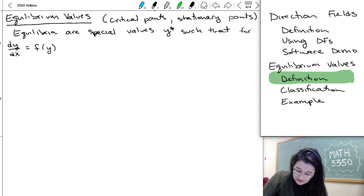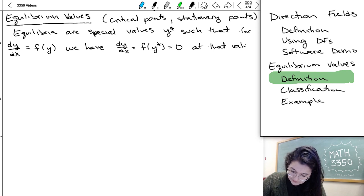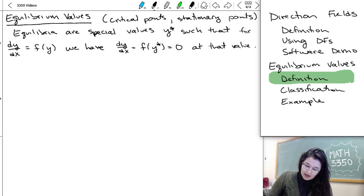And the values y star that are equilibria are going to be when we have dy/dx equal to f(y*) equal to zero. So if you can plug y star into the ODE and get zero, that means it's an equilibrium. And just like I said, the word for the type of differential equation where we can solve for these are autonomous.